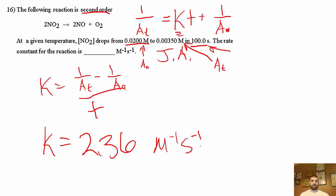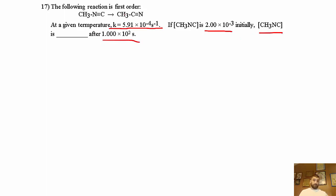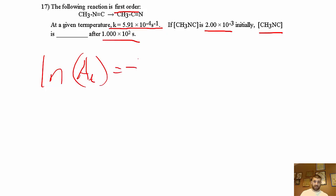Problem 17: the following reaction is first order. At a given temperature K equals the given value. If the initial concentration of CH₃NC is 2×10⁻³ M, what is the concentration after a certain time? Since it's first order, the equation to use is: ln[A]t = −Kt + ln[A]0.